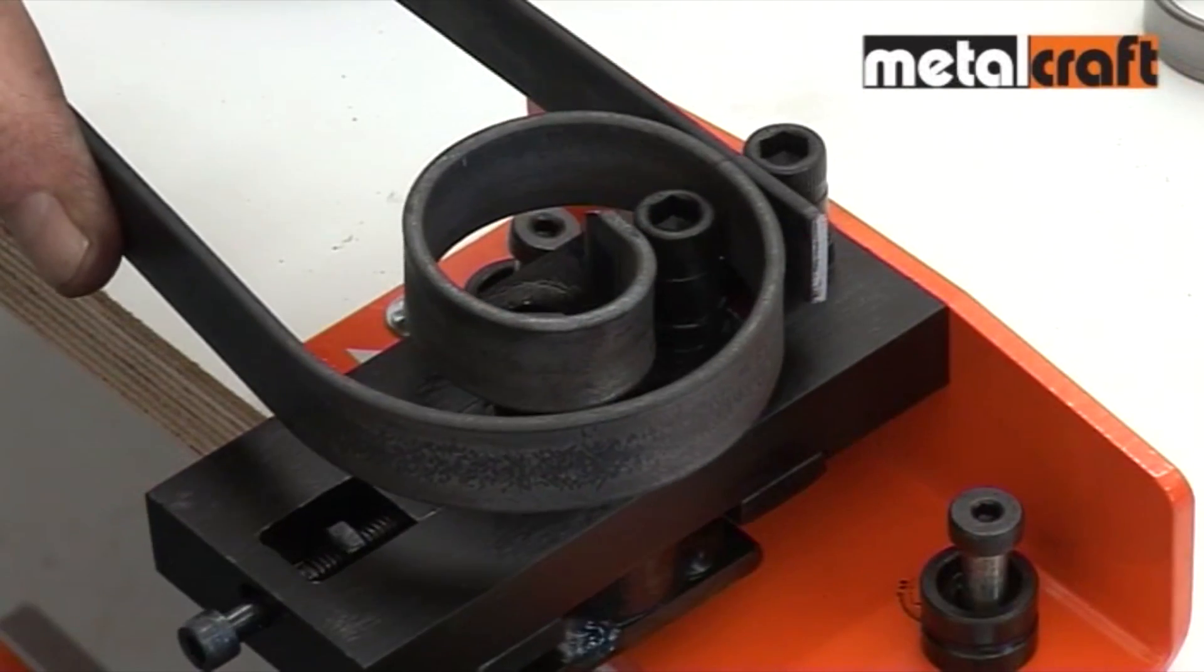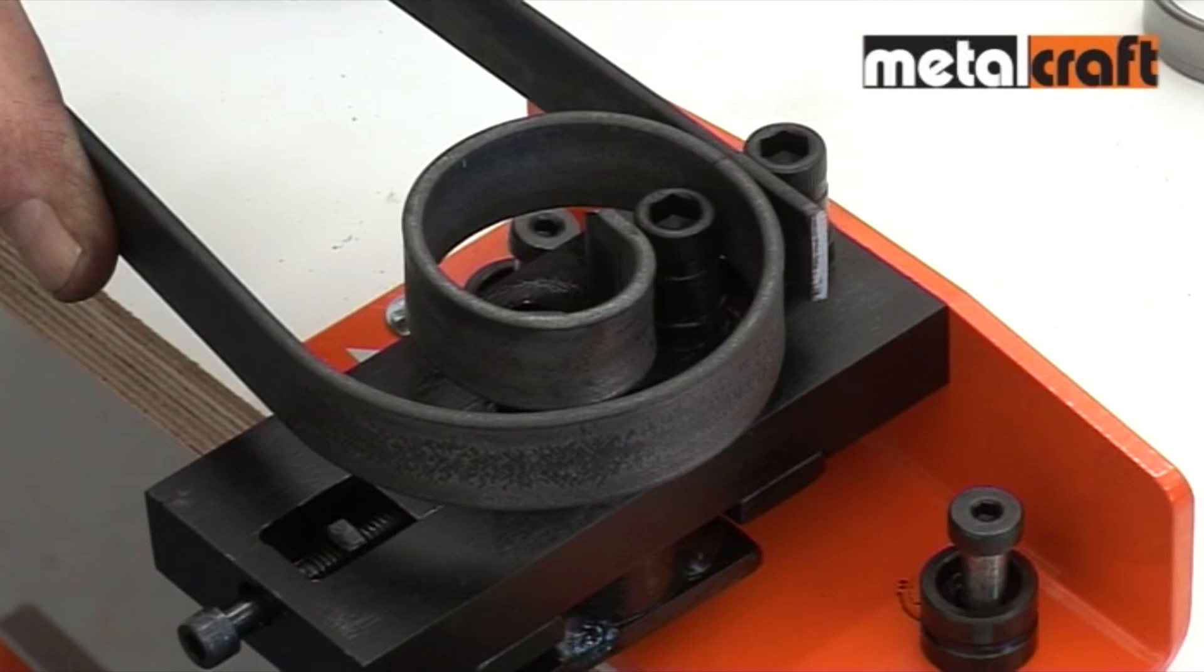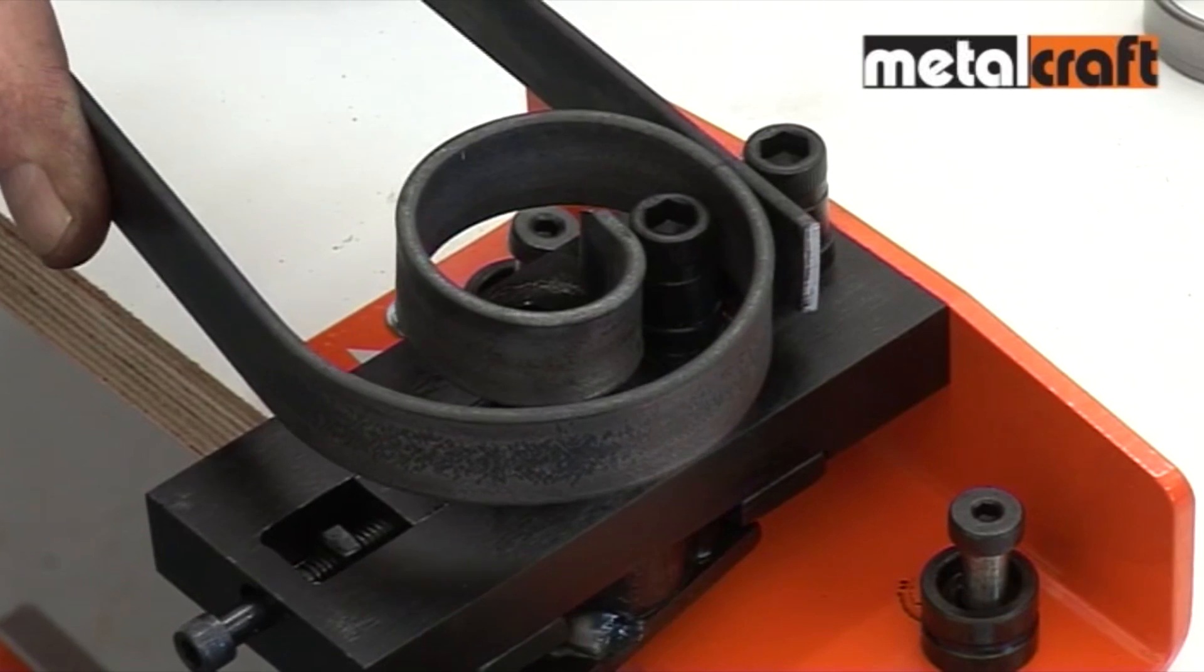And if necessary, you can undo and remove the tall side rollers if they get in the way of riveting.